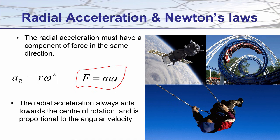To have an acceleration in the radial direction, we need some kind of force also in the radial direction — that's F equals MA, Newton's second law. Looking at three examples: for the person on a swing, the radial acceleration is provided by the tension in the chain. For the satellite, it's the gravity of the Earth. For the roller coaster, it's the normal force from the track acting on the cars.